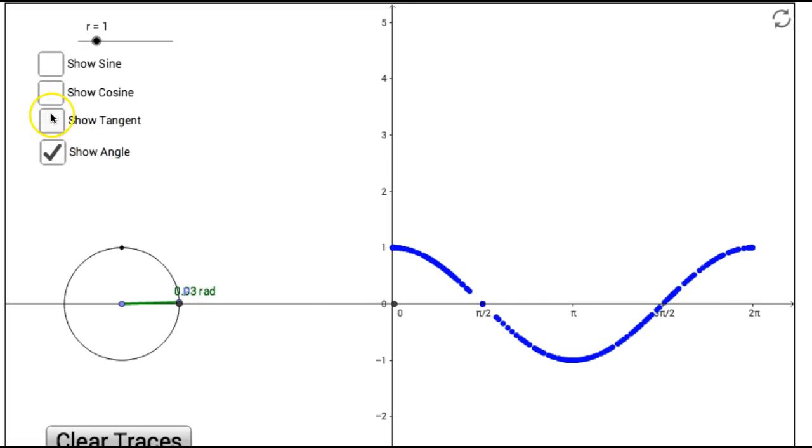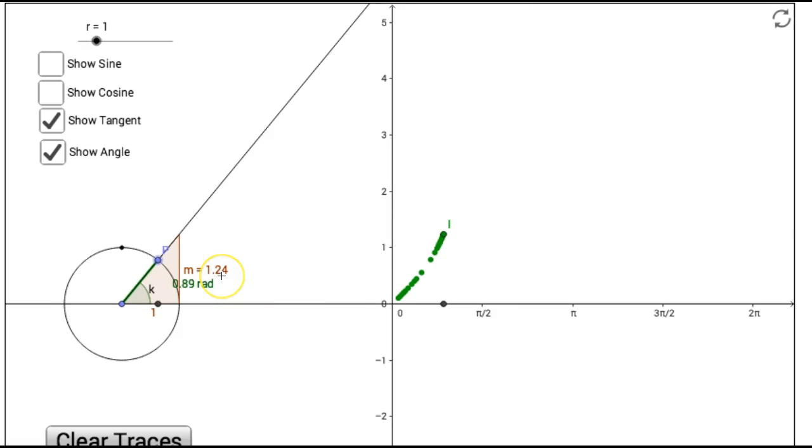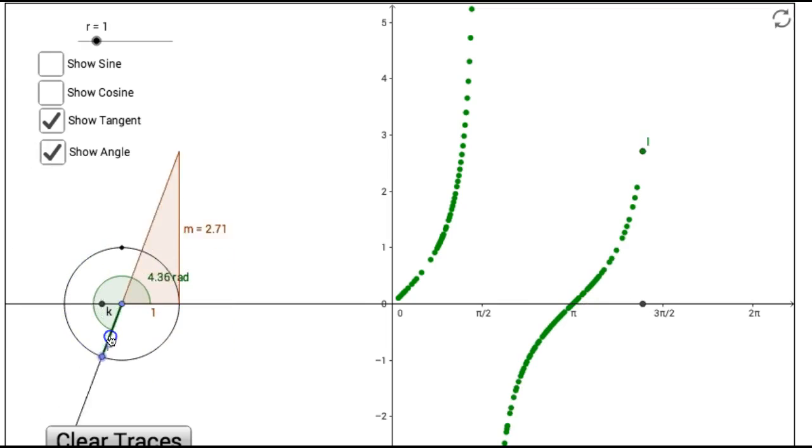So now let's look at tangent. Tangent is, again, your slope graph. So it's a little harder to think about. Let me clear out all my traces here. Here my slope is 1.24 and my angle is 0.89. But what happens when we get to 90 degrees? My slope becomes infinitely - I can't get it to lock on 90 degrees this time, but it's undefined there. You have an undefined slope. Then going back down, and it traces this pattern that you see here. So that's the tangent graph. It's a little funky looking.